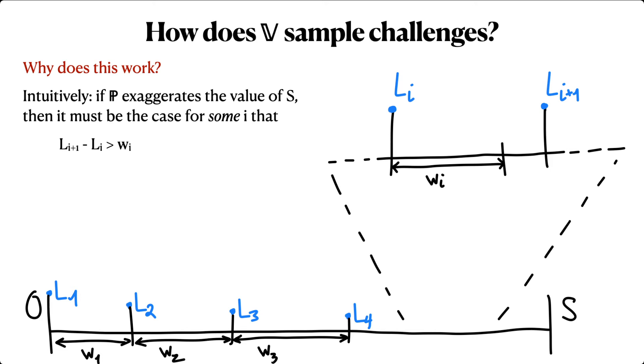Well, in essence, if the prover exaggerates the value of S, in other words, if it claims that it knows more total signed weight than it actually does, this means that the prover must commit to at least one leaf in the signature tree that the verifier would reject.